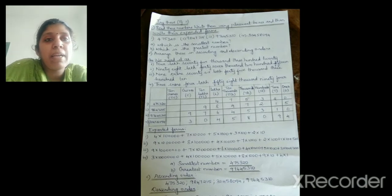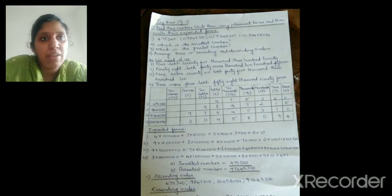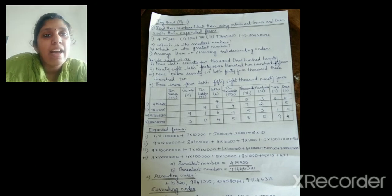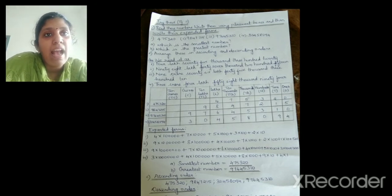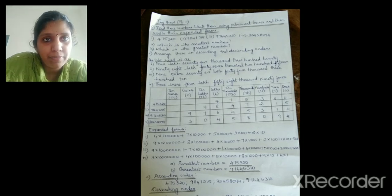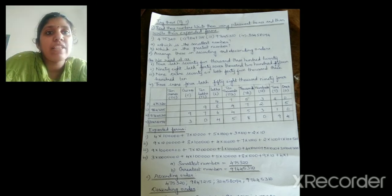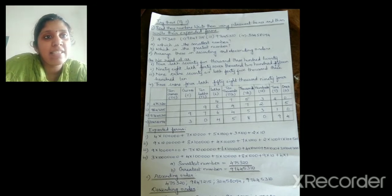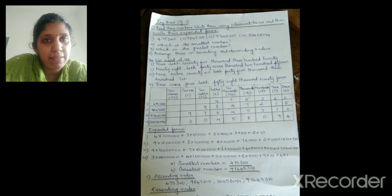Coming to 'Try These' given on page number 11: read these numbers, write them using placement boxes and then write their expanded forms. Which is the smallest number? Which is the greatest number? Arrange these in ascending and descending order. Four different sums are given.